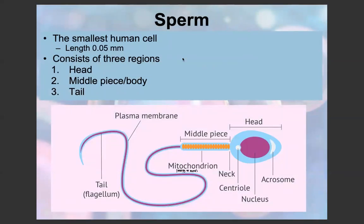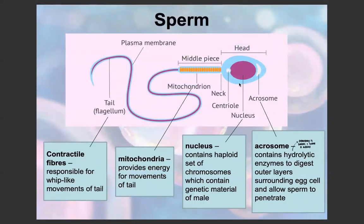The sperm is the smallest human cell, with a length of 0.05 millimeters — obviously not visible to the human eye. The sperm consists of three regions: the head, a middle piece, and a tail. In the head, we have an acrosome, which contains hydrolytic enzymes that digest the outer layers surrounding the egg and allow the sperm to penetrate — hydrolytic enzymes mean that water is added to break something, in this case the outer layer of the egg cell. The head also contains the nucleus, which holds the genetic material of the male, and it would be a haploid set because the sperm is a gamete.